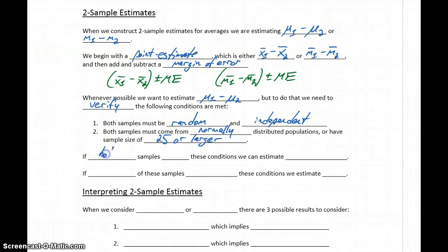If both of our samples meet these conditions, then we can estimate μ1 minus μ2. If either of our samples fails these conditions, then we have to estimate m1 minus m2. So the difference of our population means if the conditions are met, and the difference of our population medians if the conditions aren't met.